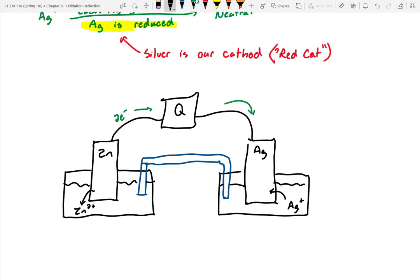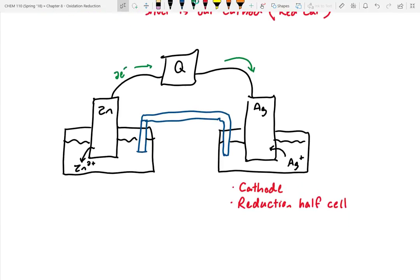All right we already said that silver is our cathode. It's our reduction half cell. And what charge do cathodes have again? Positive. So that'd be the positive pole. Over here we know that this must be our anode. It's going to be our oxidation half cell. And it's going to have the negative charge associated with it.